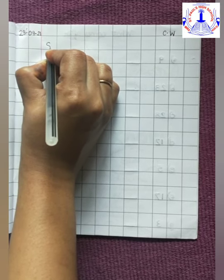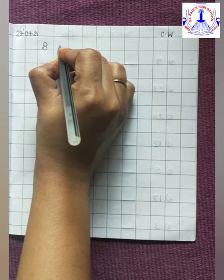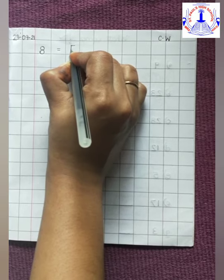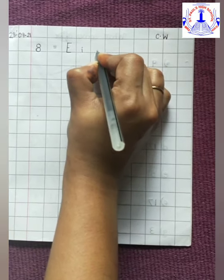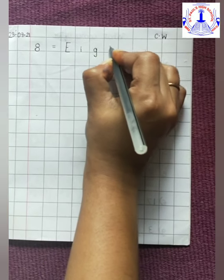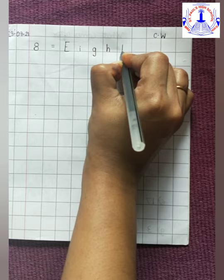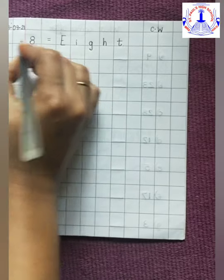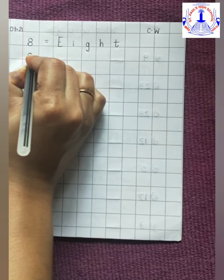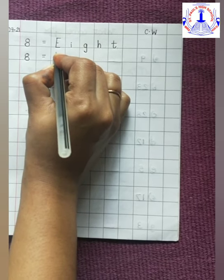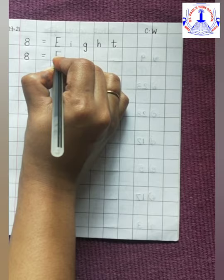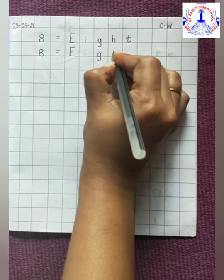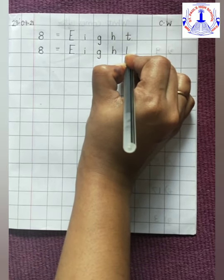So children, write number 8, then put equal to sign, write capital E, small i, small g, small h, and small t. E-I-G-H-T, 8. Write number 8, put equal to sign E-I-G-H-T, 8.